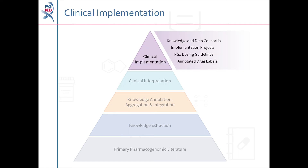At the top of the PharmGKB Knowledge Pyramid, supported by the layers below, is the clinical implementation of pharmacogenomics. PharmGKB collaborates with groups carrying out pharmacogenomic research or who are bringing pharmacogenomics into the clinic. We are part of the Clinical Pharmacogenetics Implementation Consortium, or CPIC, and are involved in writing drug dosing guidelines based on an individual's genotype.